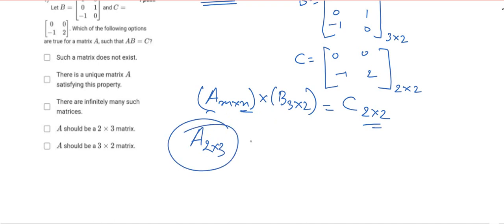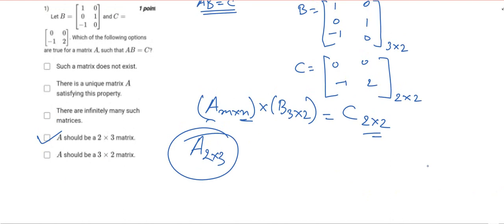This matches with this - A should be a 2×3 matrix. This is good and such a matrix does not exist, this option is eliminated. There is a unique matrix A satisfying this property, and there are infinitely many matrices, and this option was eliminated.